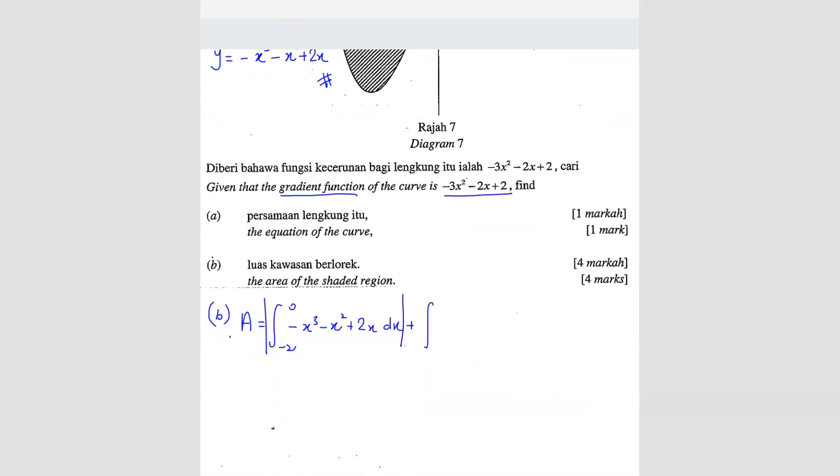The x is going to be from 0 to 1. And then same thing, negative x cube minus x square plus 2x dx.